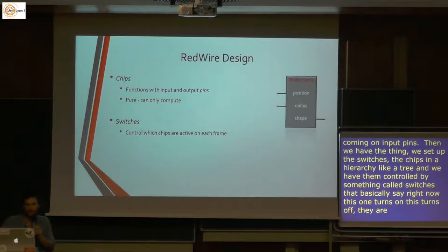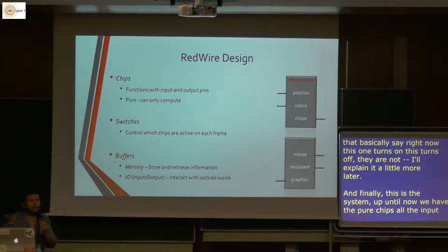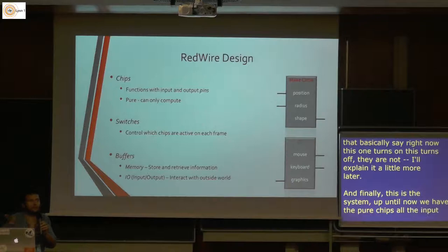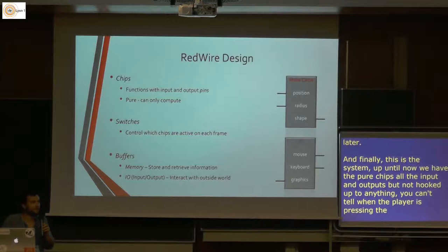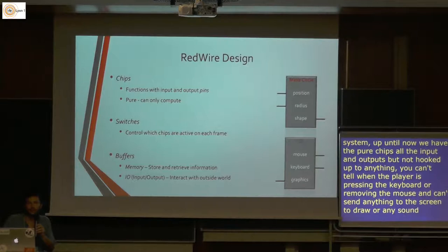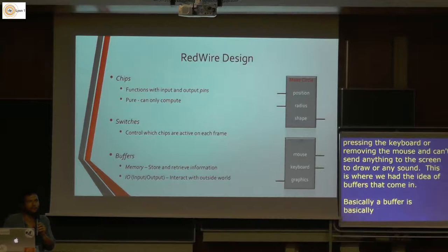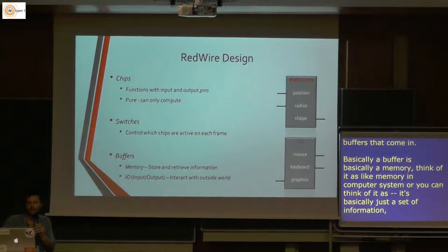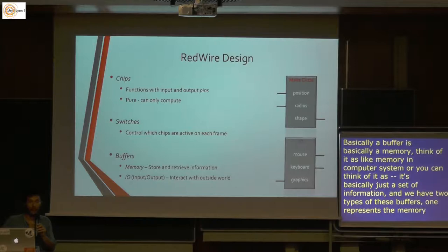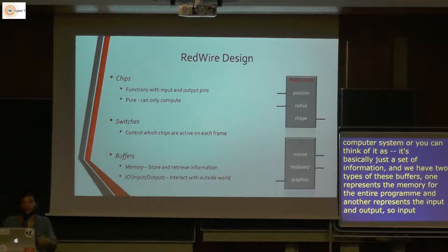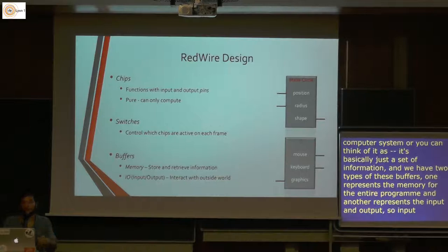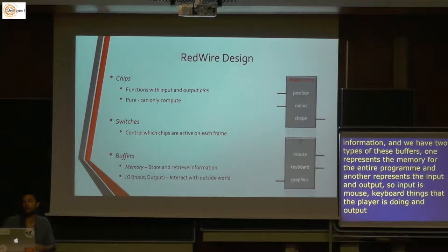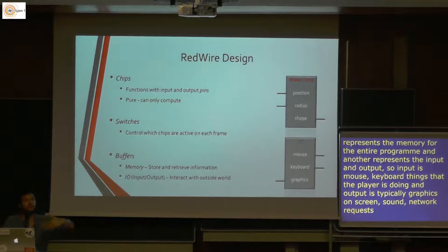Switches basically just say which chips are turned on and which are turned off at any given moment. Then we have the idea of buffers to connect chips to the outside world — because pure chips with only inputs and outputs aren't hooked up to anything by default. You can't tell when the player is pressing the keyboard or moving the mouse, and you can't send anything to the screen. Buffers act like memory. We have two types: one represents the memory for your entire program, and another represents input and output — the mouse, keyboard, graphics on screen, sound, network requests, anything interacting with the outside world.